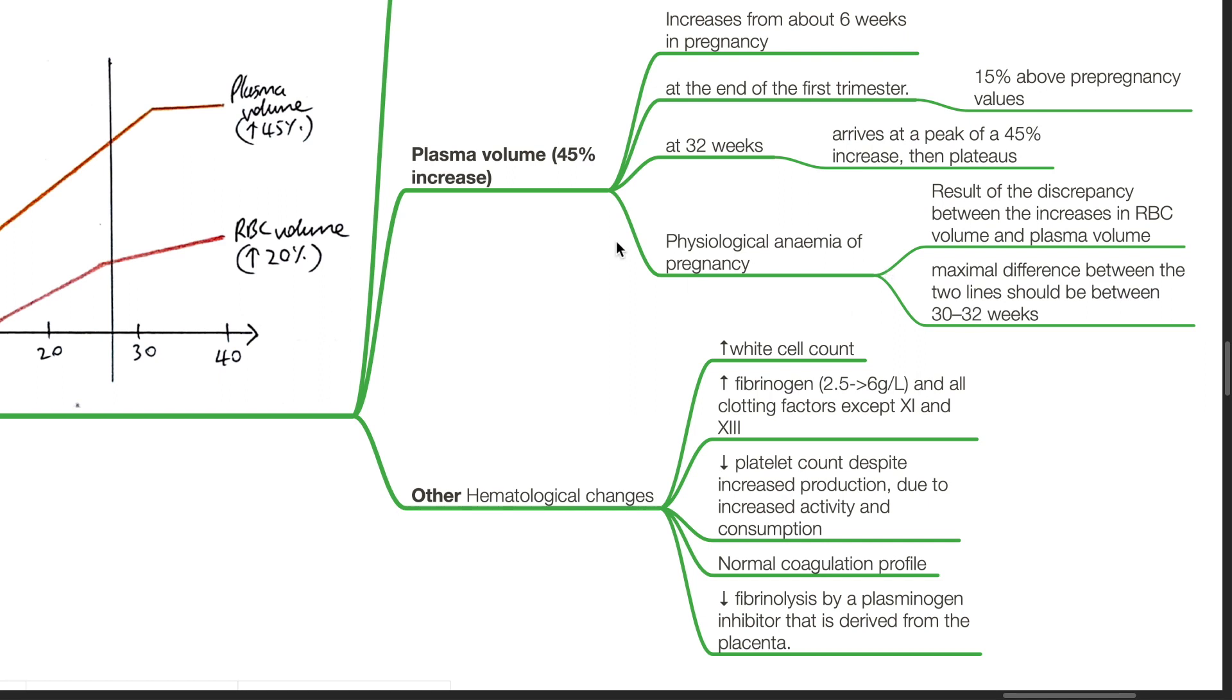Other hematological changes include increase in WBC count, increase in fibrinogen from 2.5 to 6 grams per liter, and all clotting factors except for 11 and 13. Decrease in platelet count despite increased production due to increased activity and consumption. Normal coagulation profile. Decreased fibrinolysis by a plasminogen inhibitor that is derived from the placenta.